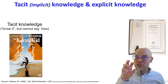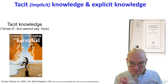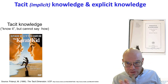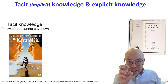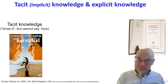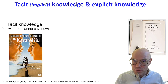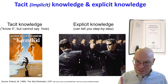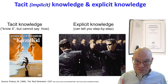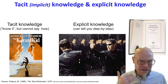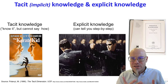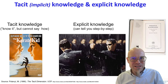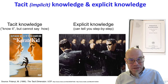Now, if you had the explicit algorithm of what you're doing when you're fighting karate, then you could download it. That's what they do in The Matrix — when you learn how to do karate, you just download the code of karate. And then suddenly you have a step-by-step recipe for fighting karate.